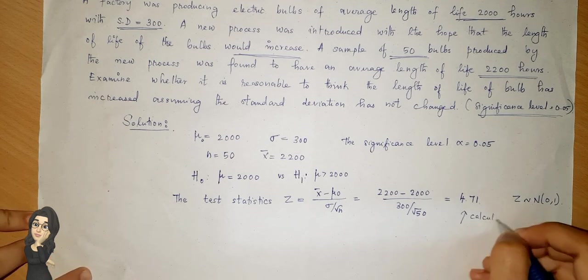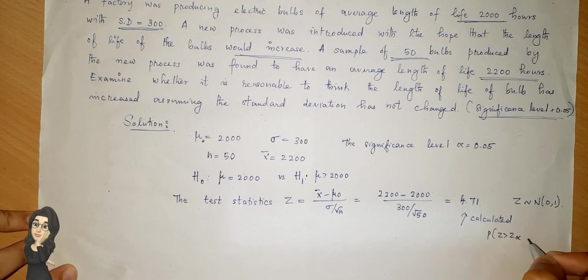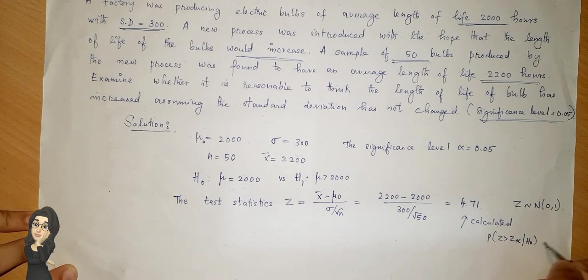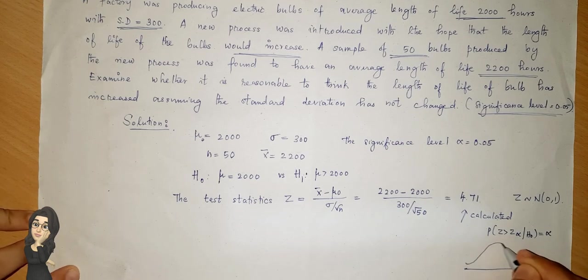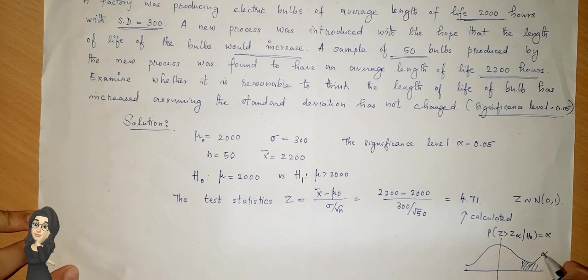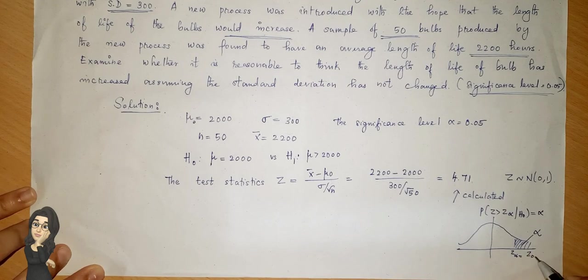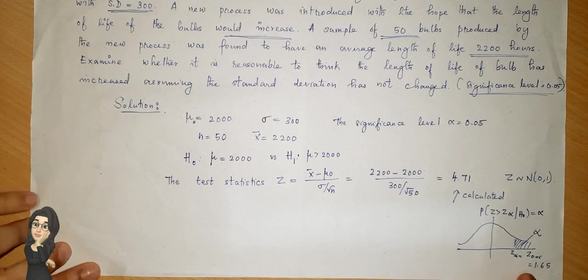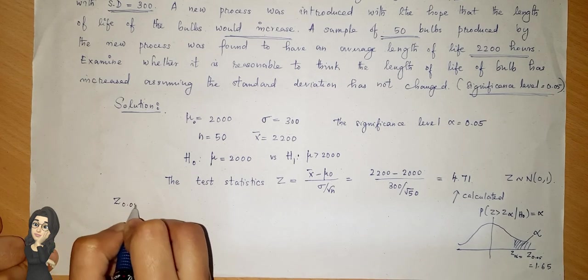We have to find the tabled value such that the probability of z greater than z-alpha under H0 is equal to alpha. So z-alpha with alpha equal to 0.05 is found to be 1.65 from the standard normal table, as discussed when we studied the standard normal distribution. So you can note that z-0.05 is equal to 1.65.